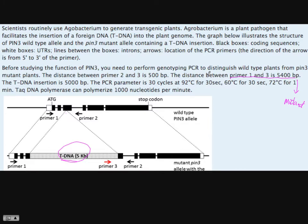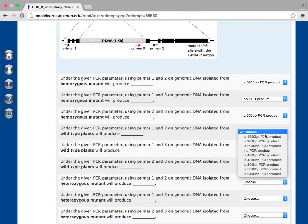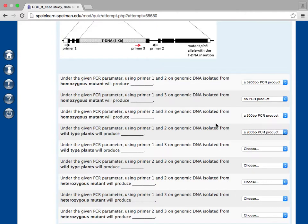The next question is primer 1 and 2 in a wild type. Basically here, 1 and 2 in a wild type. We know from 1 and 2 in a mutant is 5.9, and this insert is 5 kb, so minus that, that means the insert is 5.0 kb, so in a wild type, that should be 0.9 kb.